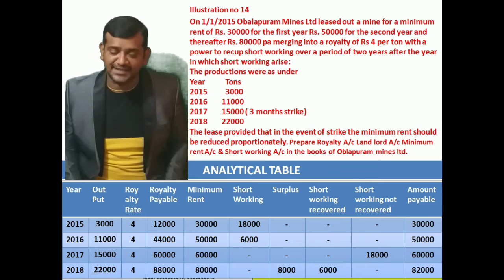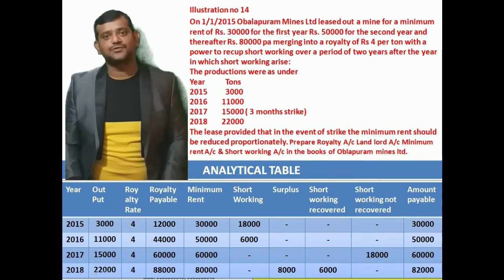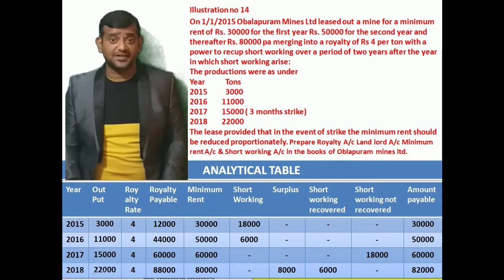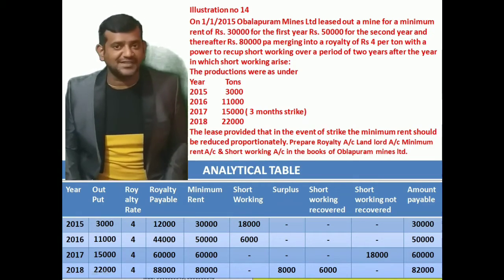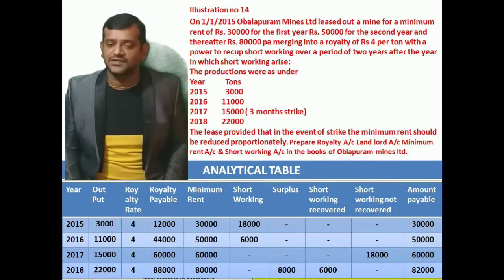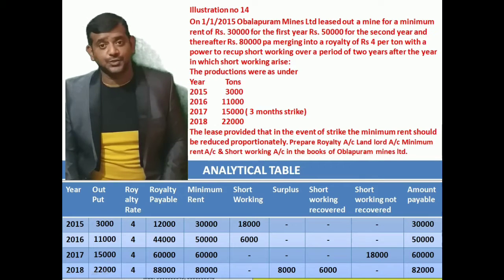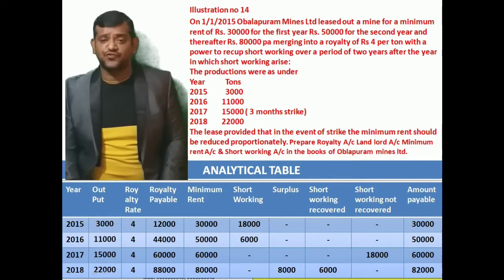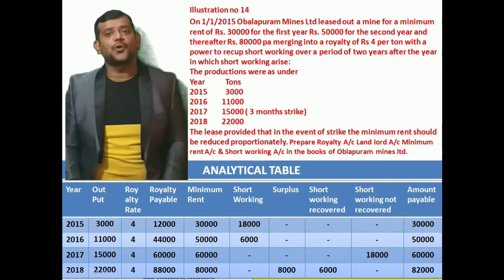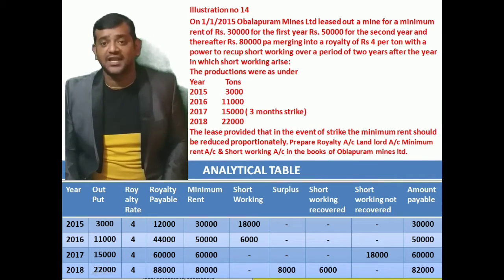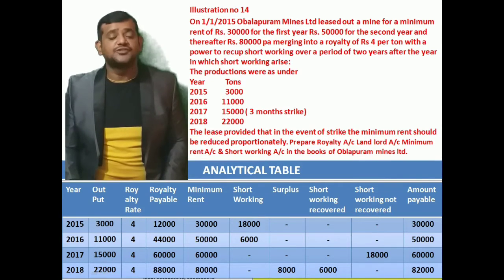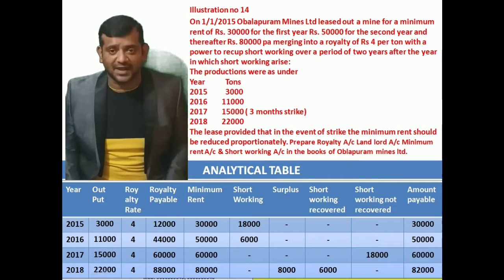On 1-1-2015, Obulapuram Mines Limited leased out a mine for a minimum rent of Rs. 30,000 for the first year, Rs. 50,000 for the second year, and thereafter Rs. 80,000 per annum, merging into a royalty of Rs. 4 per ton with the power to recoup short working over a period of two years after the year in which short working arises.